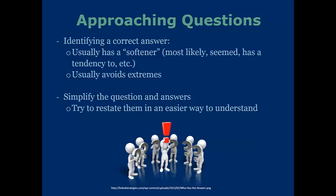Be mindful of that. Another thing to take note of: simplify questions and answers if you can. Restating them in an easier way is going to be helpful when it comes time to answer them. The MCAT generally likes to word questions and answer choices in a very convoluted fashion, with things such as double negatives. It's important that you rewrite these, taking out extraneous or difficult vocabulary and writing them in a more easy-to-understand fashion — though be mindful of time.